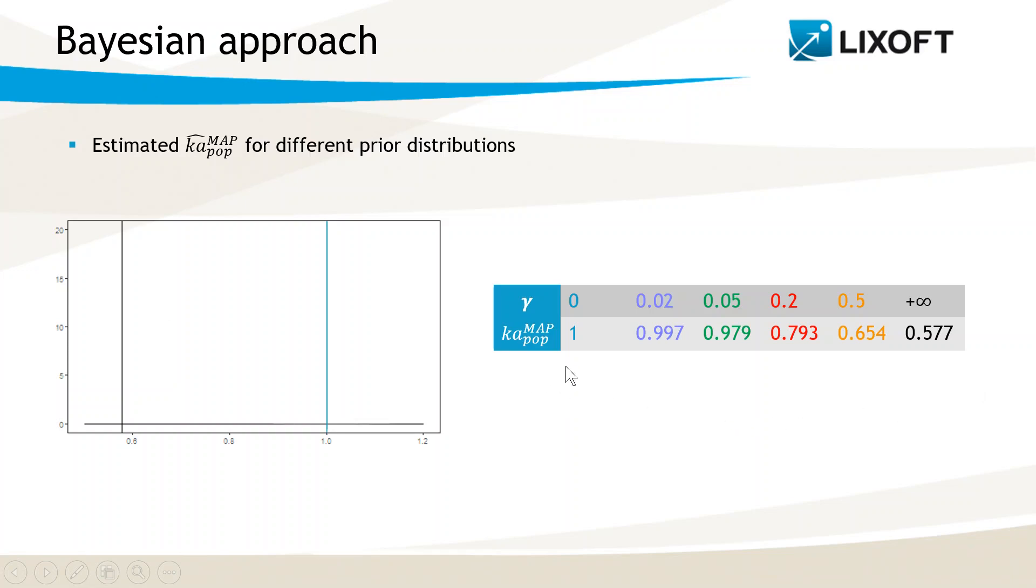This slide shows the maximum aposteriori estimates for Ka-pop in the Warfarin example that I have shown in Monolix with different values of γ. The prior value of 1 is displayed on the plot as a blue vertical line, and the estimate of Ka-pop without prior, so given by maximum likelihood estimation and based only on the data, is displayed as a black line. We can compare how the standard deviation of the prior distribution will impact the maximum aposteriori estimate for Ka-pop.